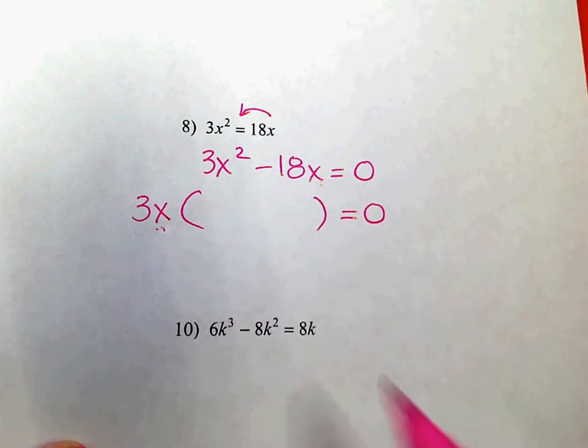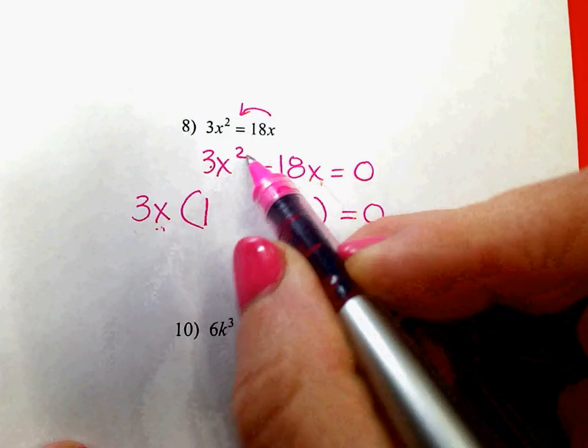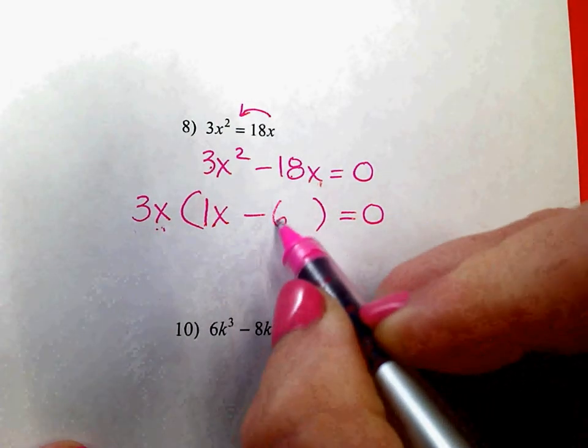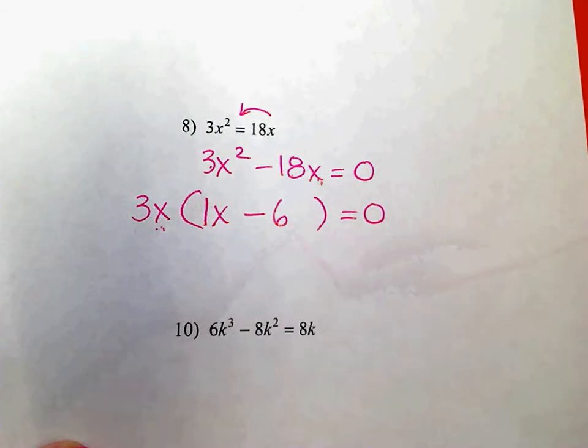And now I'm dividing. 3 divided by 3. 2x's take 1x out. Negative 18 divided by 3. 1x take it out. No x's left.